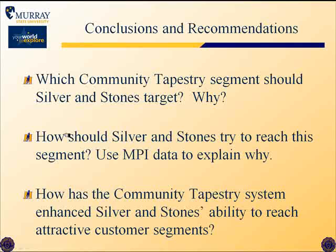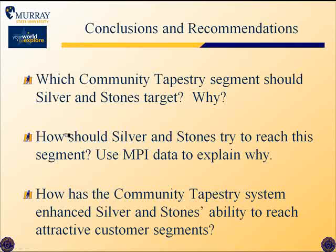The system helps by identifying attractive customers, determining where they live, and indicating the methods of communication and values with which to communicate to them, as shown in the MPI indices. Those are the activities in Chapter 2, illustrating how you would use the Tapestry Segmentation System for a local jeweler in Santa Fe, New Mexico.